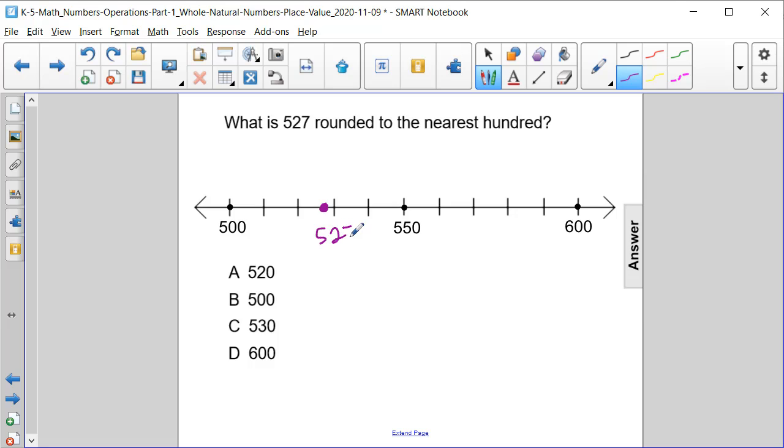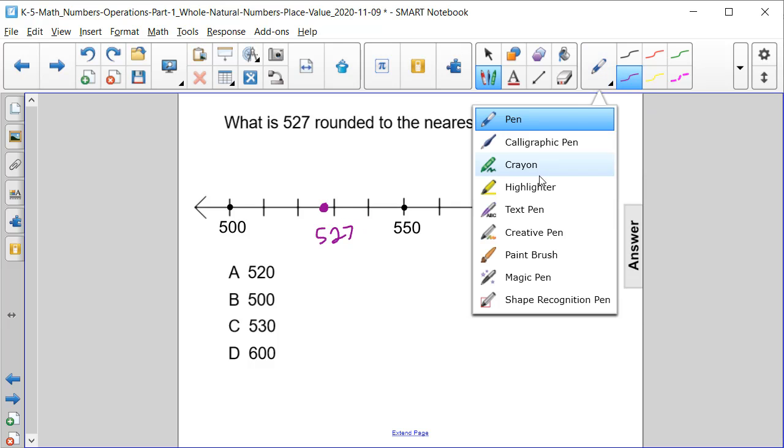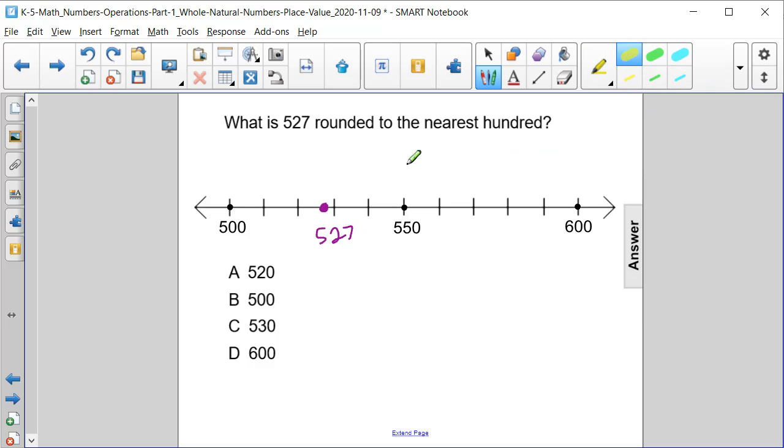Now if we compare how 527 is in relation to 500 and 600, we can see that 527 is definitely closer to 500, or answer choice B.